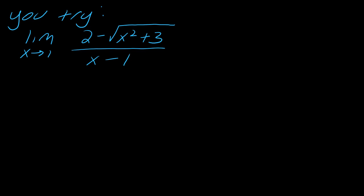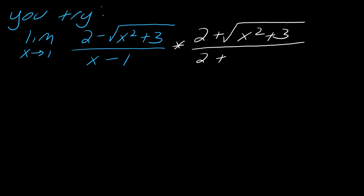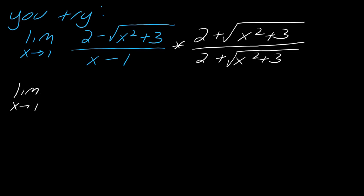On your own, I have one for you to try. I highly recommend you pause the video here, try it out, and hit play when you're ready to see the solution. I'll start by multiplying by the conjugate. Here would be the conjugate in this case. You probably don't want to work out the bottom piece — leave it alone — but you do want to foil out the top piece.